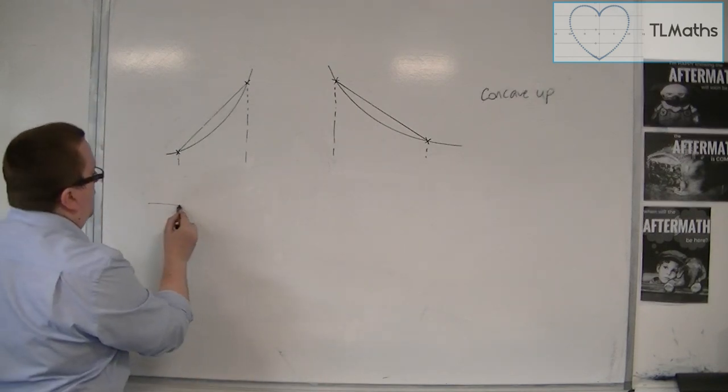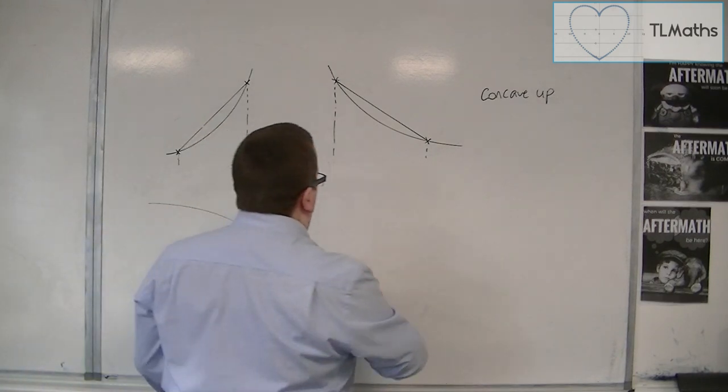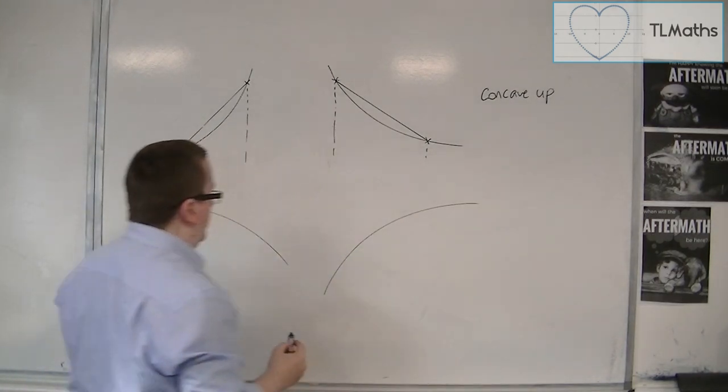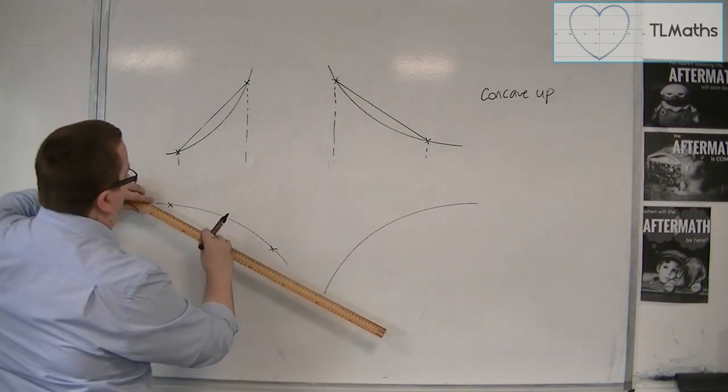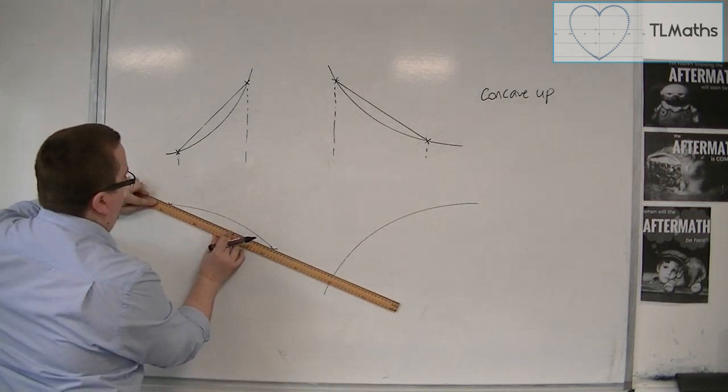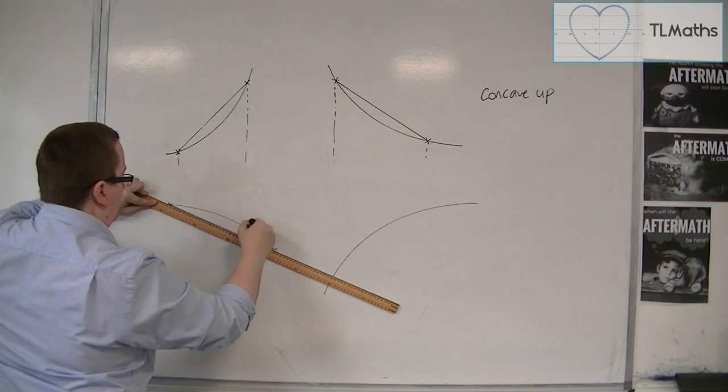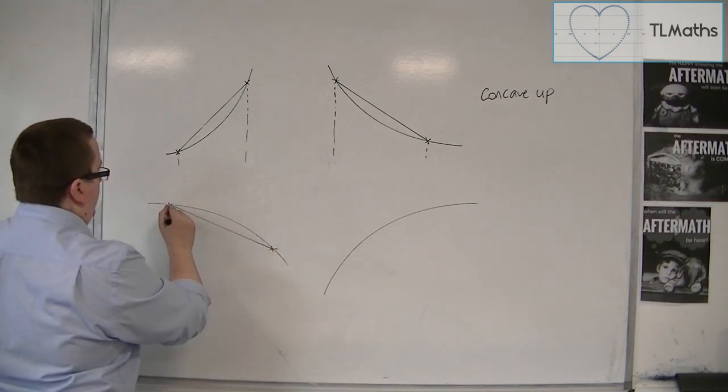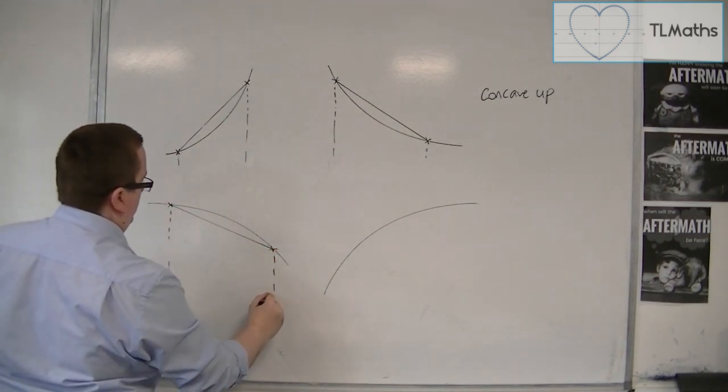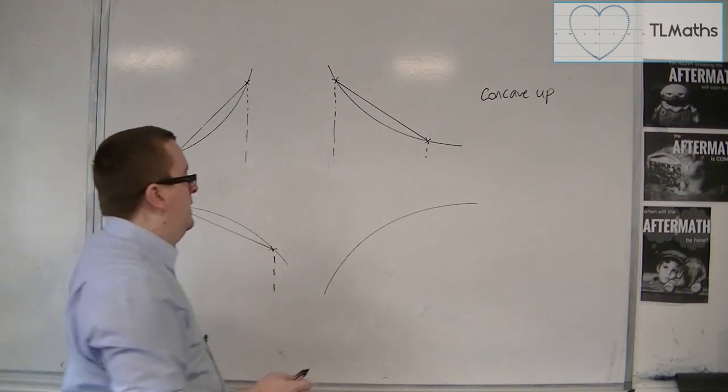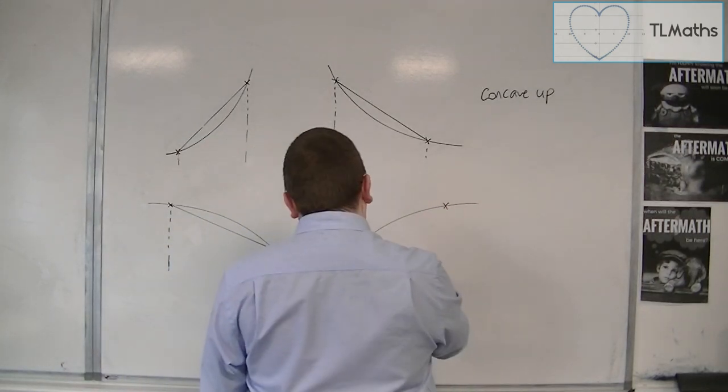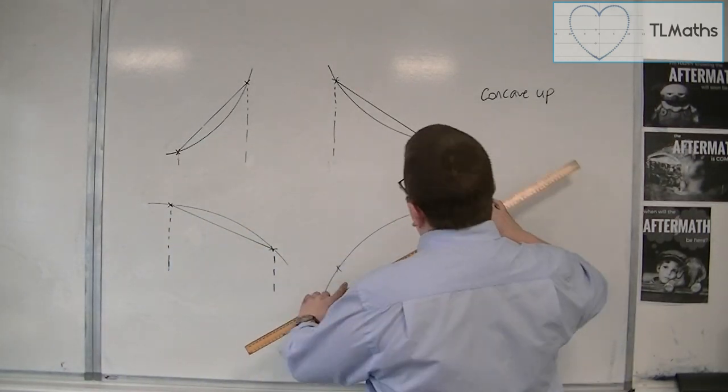If, however, the curve looks like this or like this, you can do a similar little trick. Choose two points, draw a chord between them, and then clearly the trapezium would lie below the curve in both cases. So let's quickly do it for this one as well.